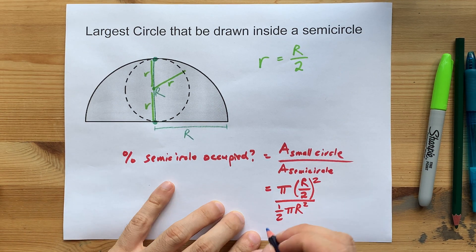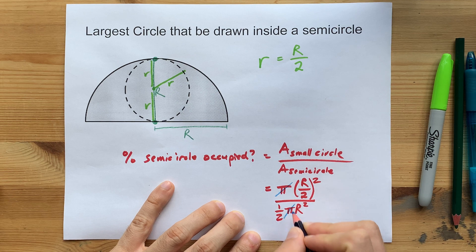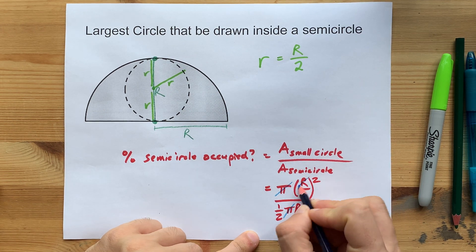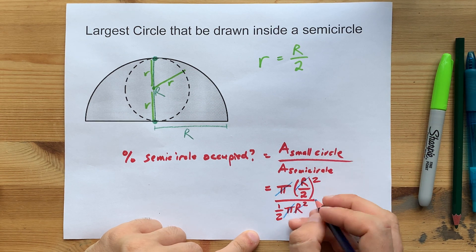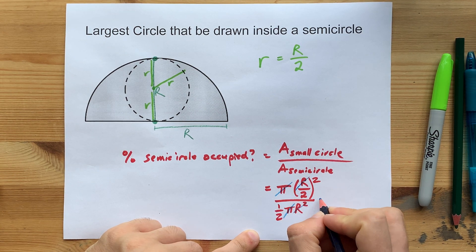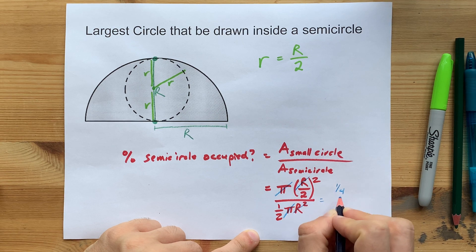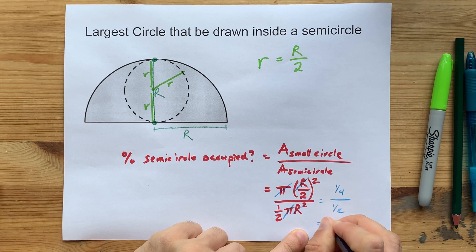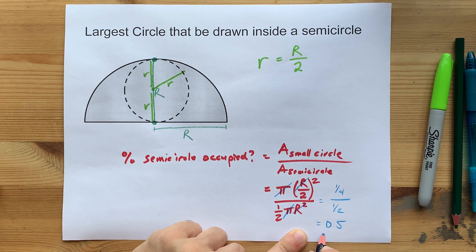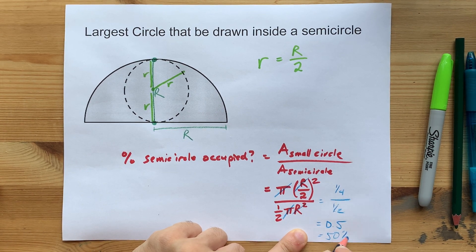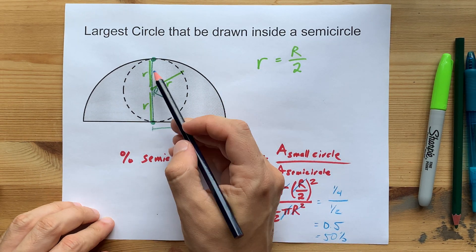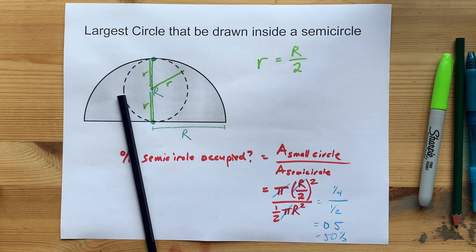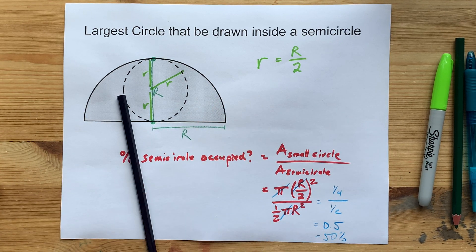Now, a bunch of canceling happens here. The π's cancel because there's one on top and one on bottom. This R² cancels with that R². And the one half on top becomes one quarter. So you end up with one quarter divided by a half. When you do that, you get a half or 50%, which means that exactly half of this semicircle is occupied by the inscribed circle. Not too bad. Pretty fun. Best of luck, and thank you.